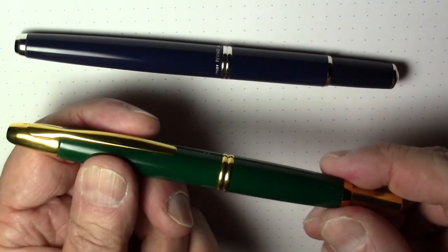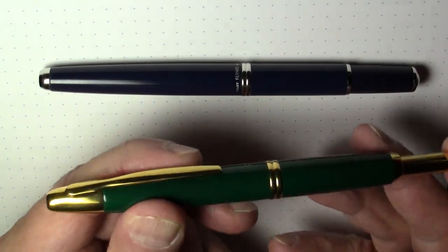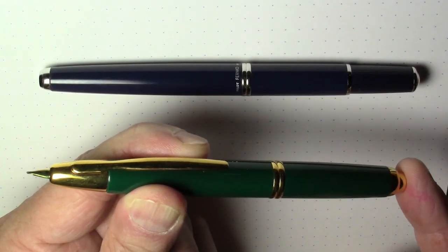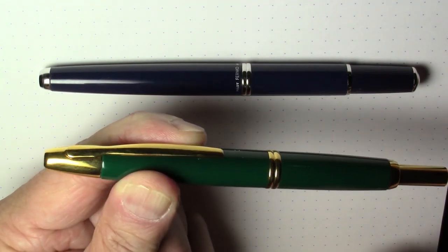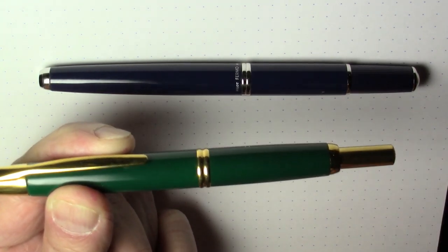So the big difference between the normal Vanishing Point and the Fermo is how you actually open it. On the normal Vanishing Point it works almost like a traditional clicky ballpoint pen. The fountain pen point comes in and out by pressing this button on the back.